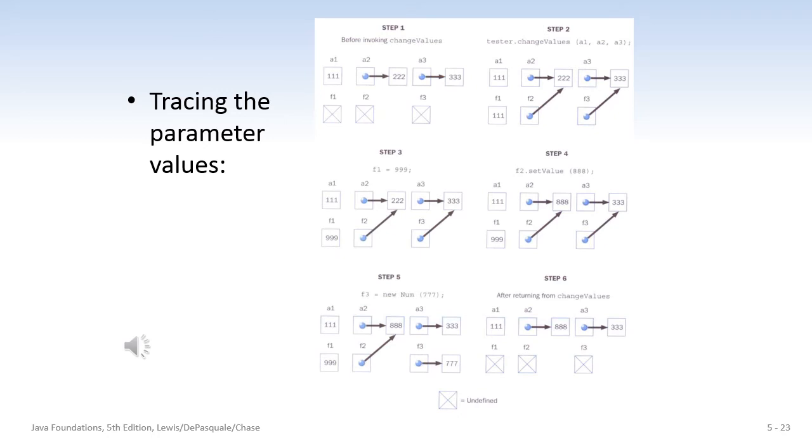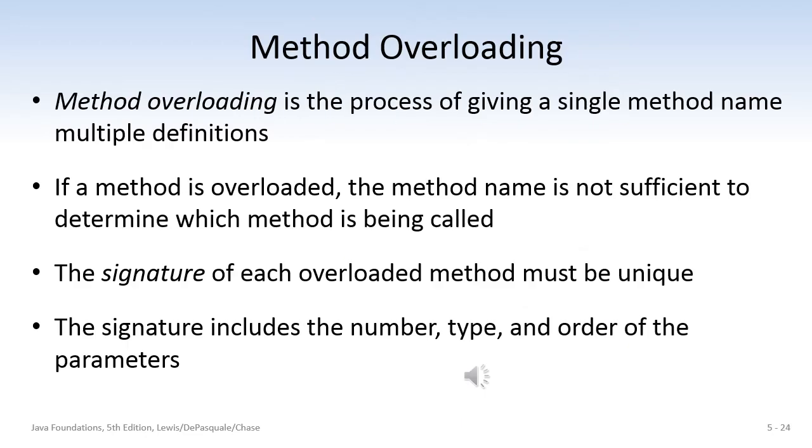So after we return from changeValues and we want to print A1, A2, and A3, the only value that's different from the first time we printed them is A2 because we used setValue to change the value of the integer in that object. And that object, A2, was an object reference variable pointing to that object. So we did, in fact, change the value that A2 was referencing. But A3 is still pointing to the original object. F3 is pointing to a different object. And A1, we could not have changed because it was passed call by value. I strongly urge you to download those files, put them in a project, and play around with this. You have to understand these concepts or you will be lost moving forward. I'm not trying to give you a hard time. I'm actually trying to help you.